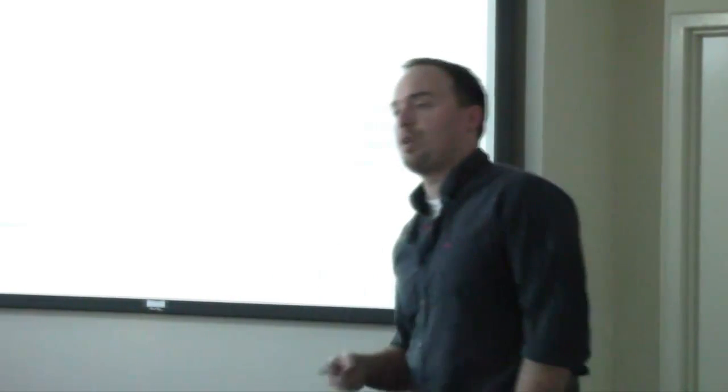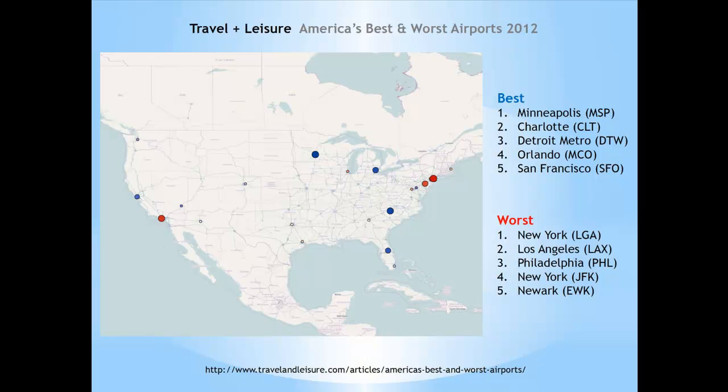Travel and Leisure puts out a ranking every year of the best and worst airports in the US — five of the best and five of the worst. One of the things I was looking at is, from a data discovery model, does this actually make sense or is it just survey data that goes against the general consensus?